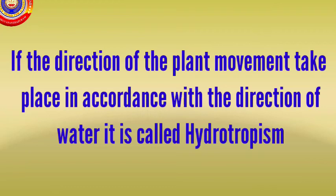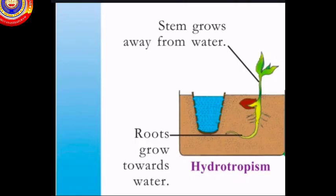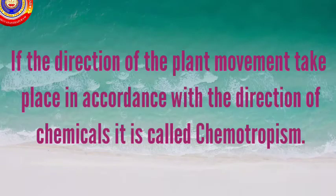If the direction of the plant movement takes place in accordance with the direction of water, it is called hydrotropism. In hydrotropism, the stem grows away from water and the root grows towards water.